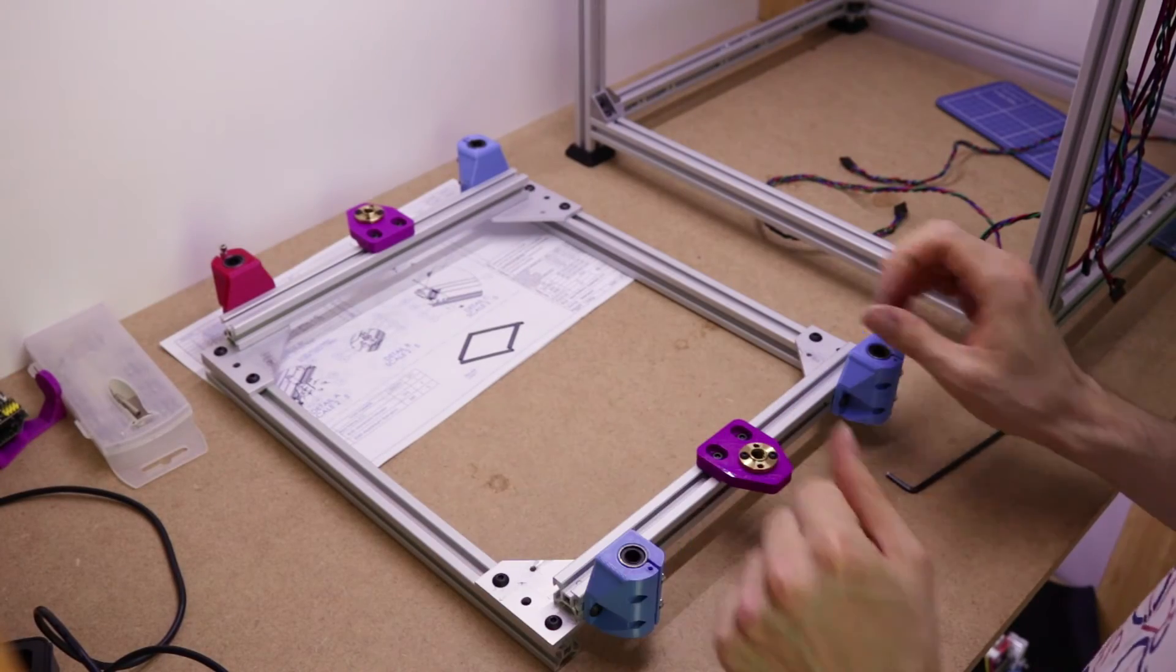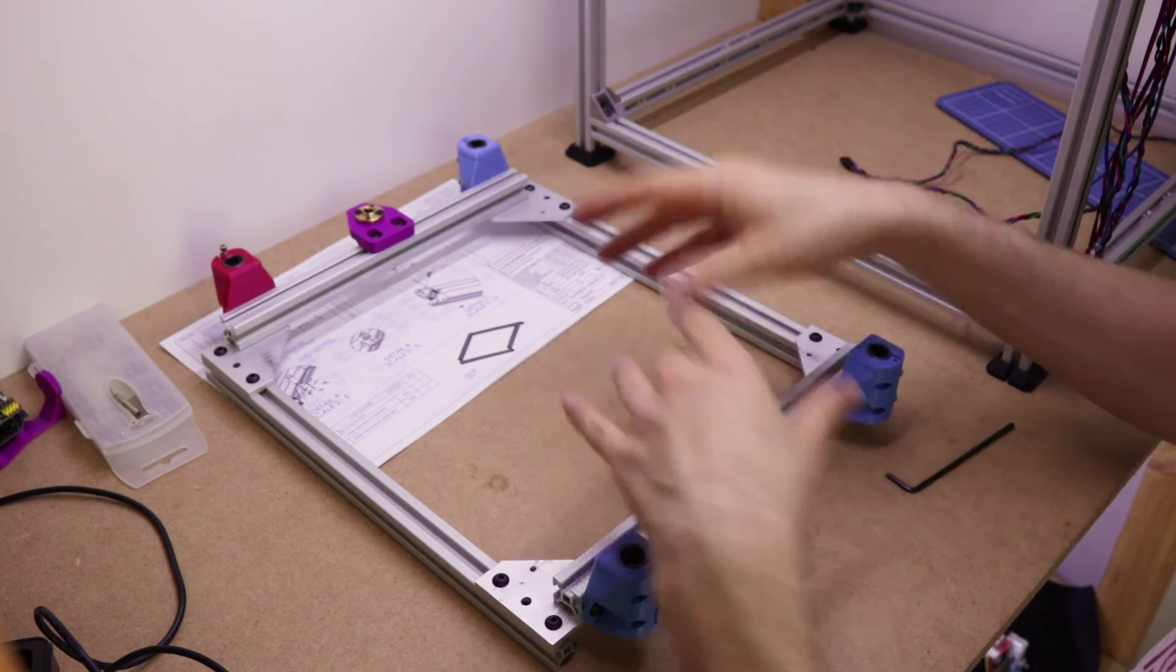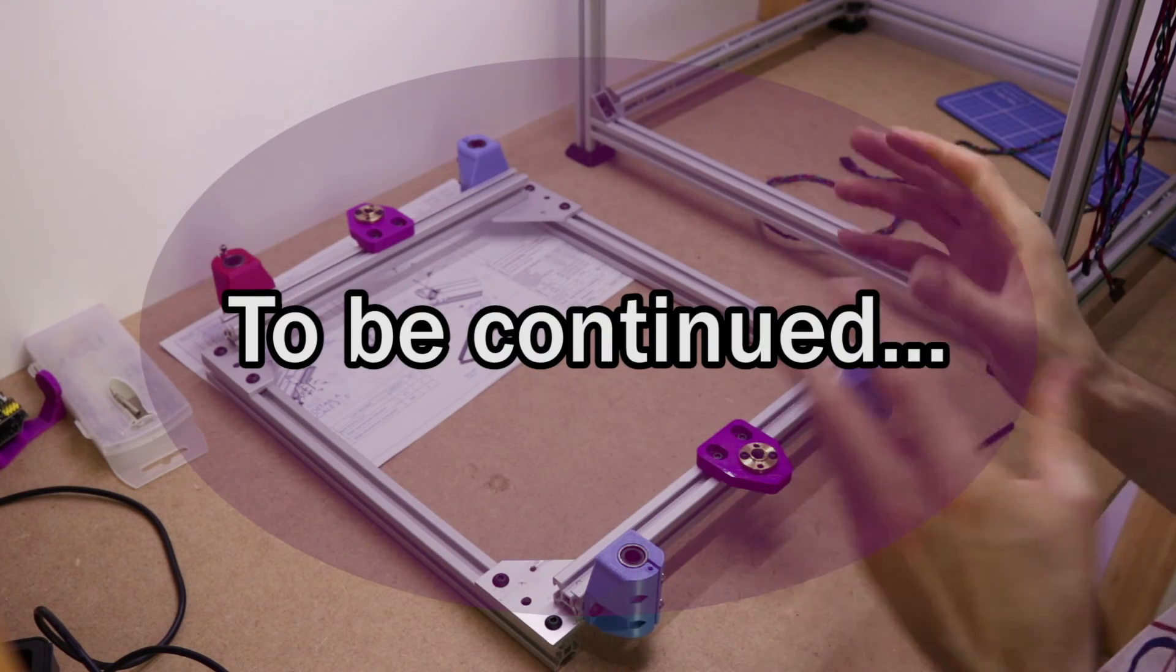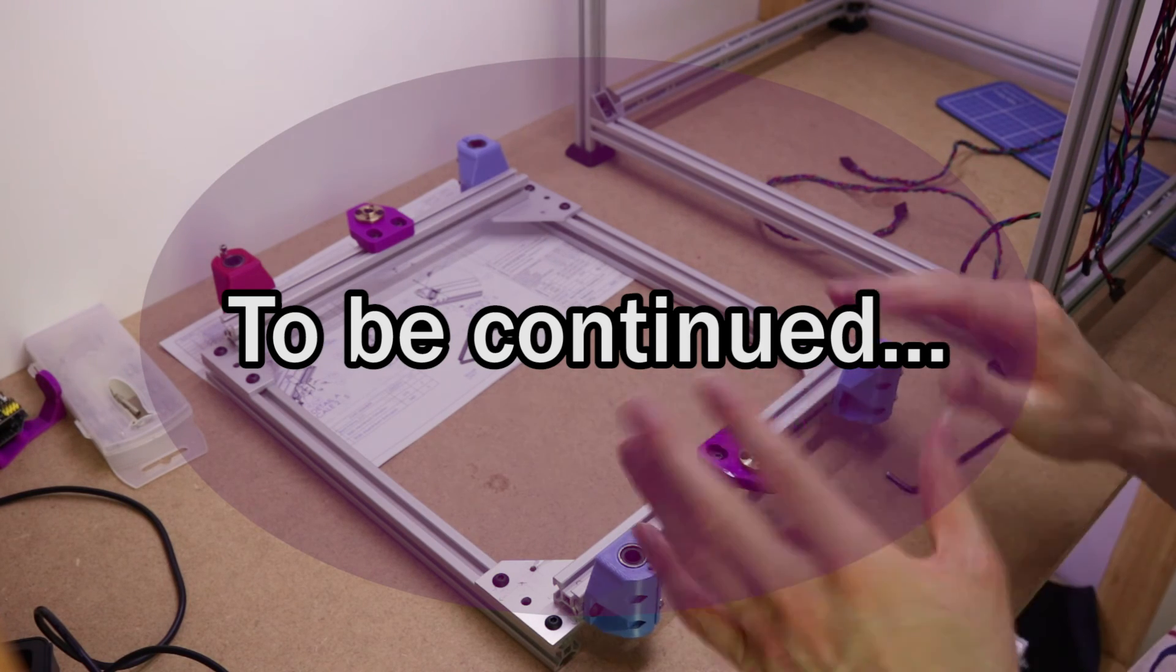So that's it for the bed platform assembly. Next time we'll go and mount this in the frame with the z-axis and everything. In fact that might be afterwards, but next we'll do the z-axis and this might go in at the same time. We'll see how we go.